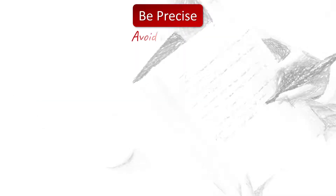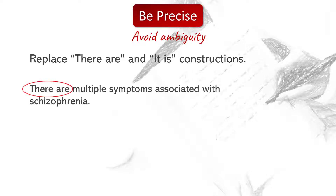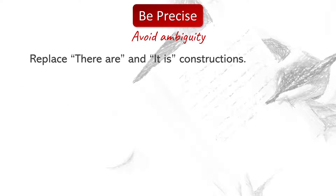Precise writing avoids ambiguity when the reader isn't sure what a word means. For example: 'There are multiple symptoms associated with schizophrenia.' Eliminate the ambiguous 'there are': 'Schizophrenia is associated with multiple symptoms.'